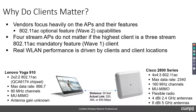Let's say we've deployed the 2800 series AP but the best device on our network is the Lenovo Yoga 910. I'm using this as an example — it could be any device. This is a 2x2x2 802.11ac device using the Qualcomm QCA6174 chipset. Because it's a two-stream device supporting only 80 MHz channels, its maximum data rate is 866.7 Mbps. It does support multi-user MIMO, but channel support tops out at 80 MHz.